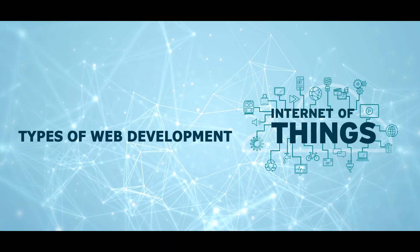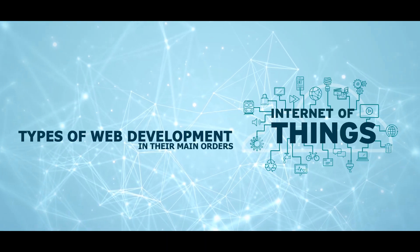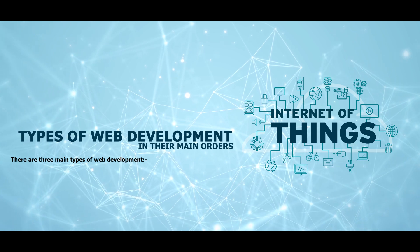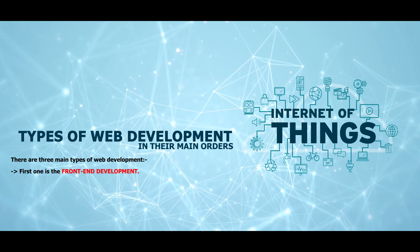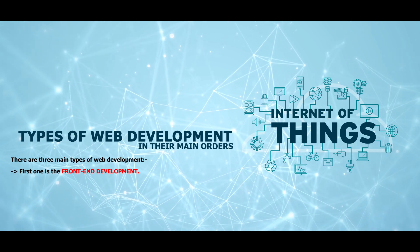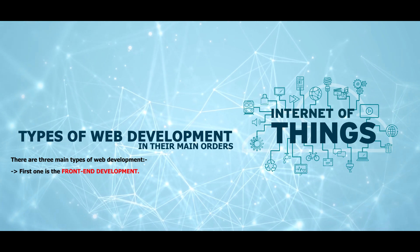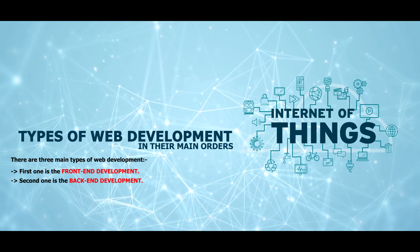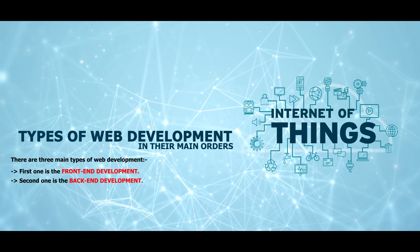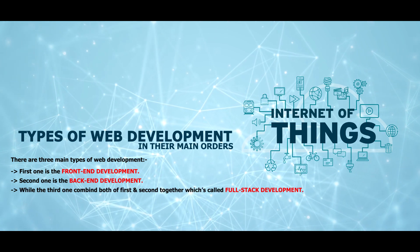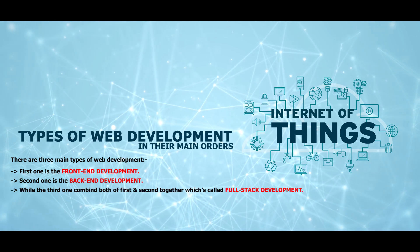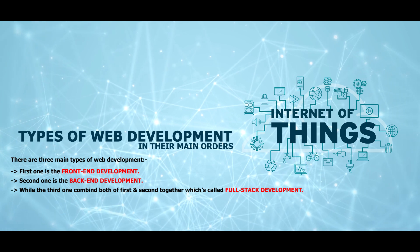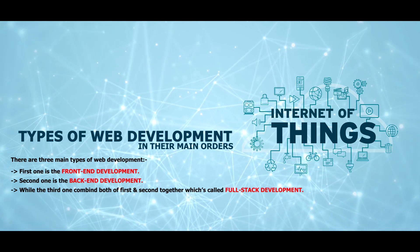Types of web development: there are three main types of web development. The first one is front-end development, the second one is back-end development, while the third one combines both front-end and back-end together, which is called full-stack development.